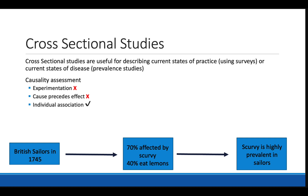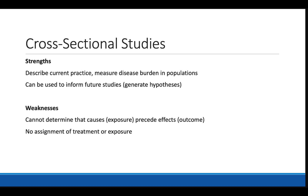Cross-sectional studies can give us some information about individual association if they use multiple groups. For example, if you know that the prevalence of scurvy is 70% on one ship and 40% on another, and you also know the rates of citrus fruit consumption, you may be able to make individual associations. The strength is describing the prevalence of diseases or survey data across a large population, and results can be used to generate hypotheses. A key weakness is the inability to determine if the cause preceded the outcome, because you're assessing both simultaneously.